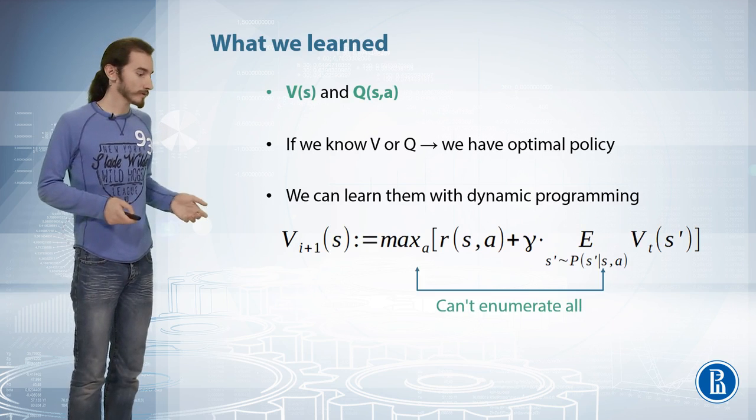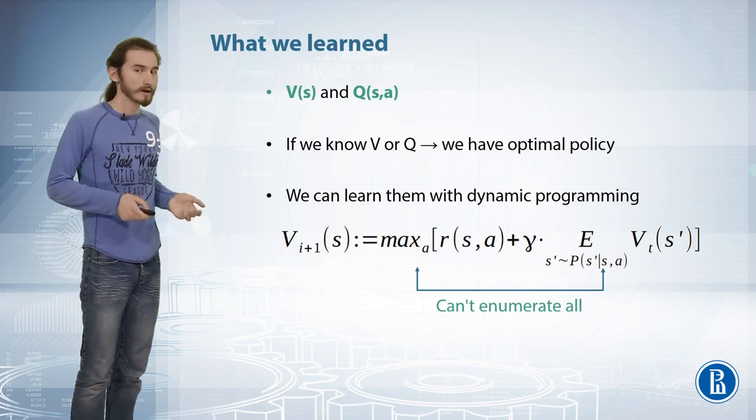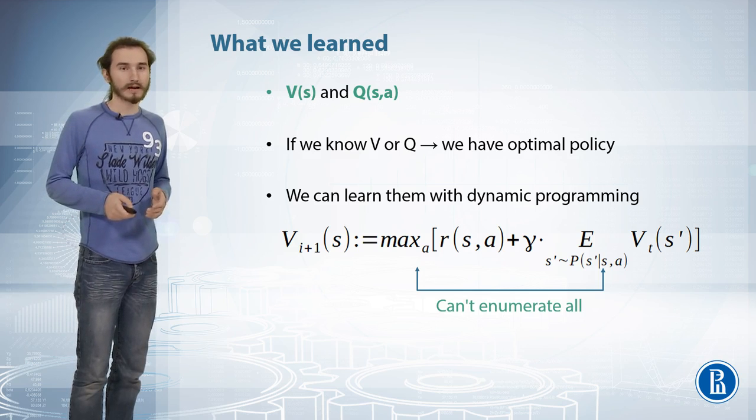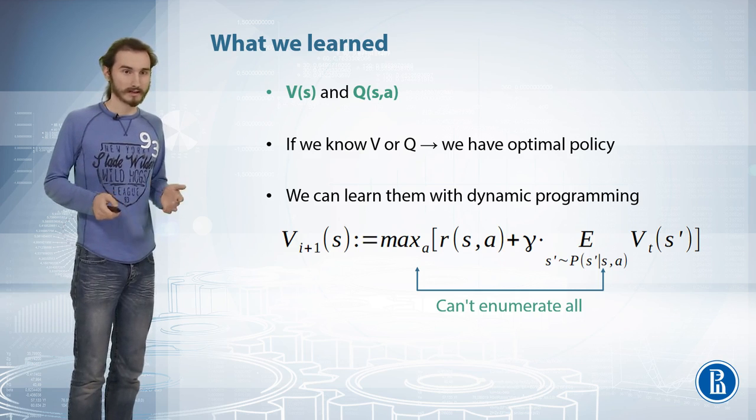With your usual value iteration, there are two missing links, the two spots that you cannot compute explicitly. First, you cannot compute the maximum over all possible actions. To do so, you would have to actually see the rewards for all actions. And in Model-free setting, in the black box setting, this would take at least one attempt for each action.